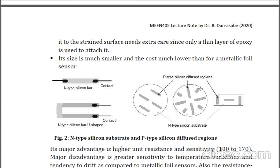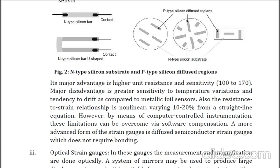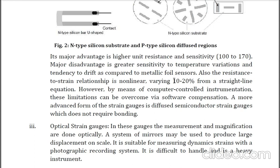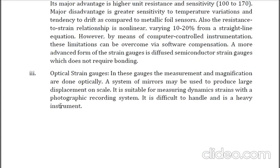An example of the material used is silicon. Its features include much higher sensitivity compared to electrical resistance — sensitivities from 100 to 170. Its error due to non-linearity is a disadvantage because it is higher: 10 to 20 percent. We also have optical strain gauges, where the measurements and magnification are done optically using a system of mirrors to produce large displacement on scale.